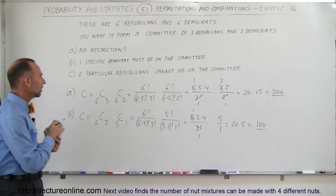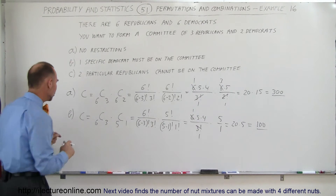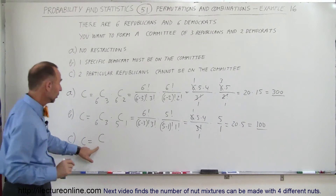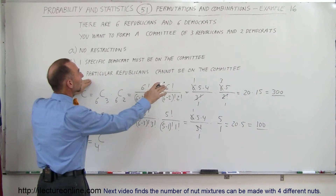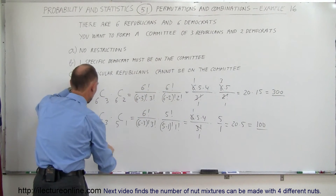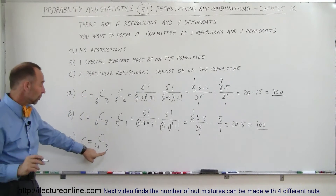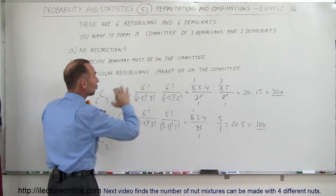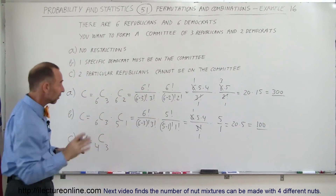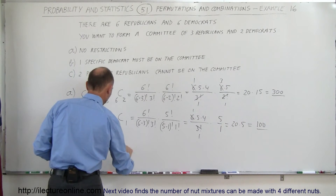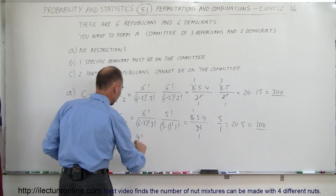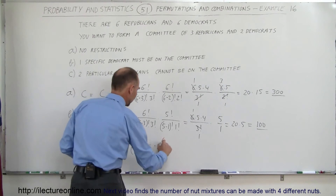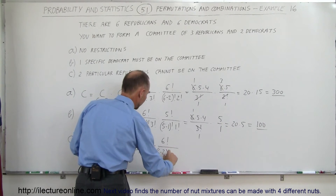For Part C, two particular Republicans cannot be chosen for the committee. That means you only have four possible Republicans to choose from. Since two cannot be on the committee and you want to pick three, it becomes C(4,3). You then multiply by the number of Democrats — no restrictions for Democrats, so C(6,2). This becomes 4!/( (4−3)! × 3!) times 6!/((6−2)! × 2!).